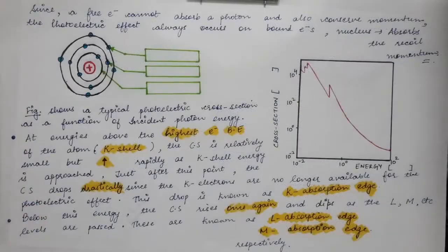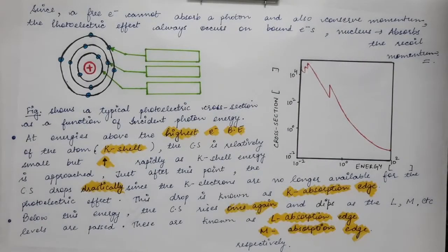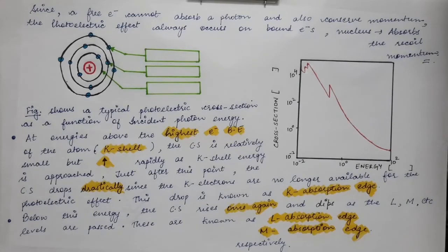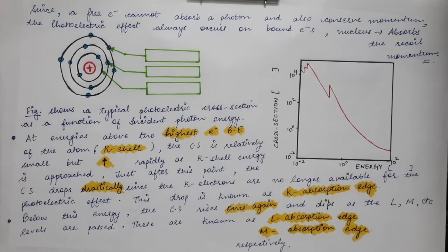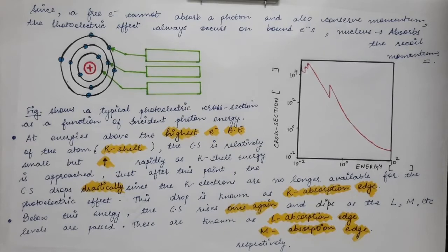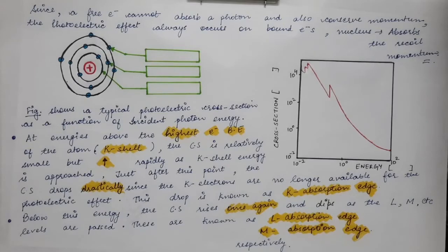Now we are going to see how the cross-section of the photoelectric effect varies with energy — what is the behavior of the cross-section with the change in energy of the incoming photon. Cross-section tells us the probability of any process or reaction to happen. So the cross-section of the photoelectric effect gives us the probability of the photoelectric effect happening. A free electron cannot absorb a photon and also conserve momentum at the same time, so the photoelectric effect always occurs on the bound electrons.